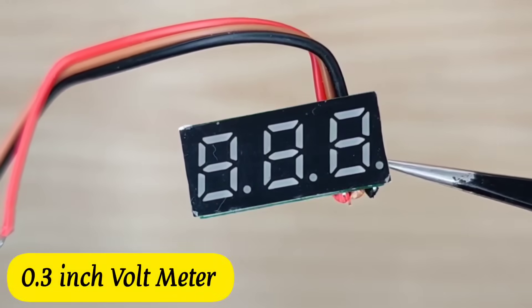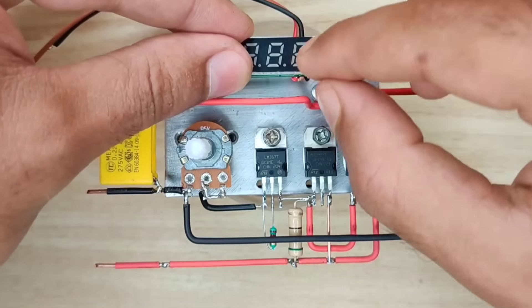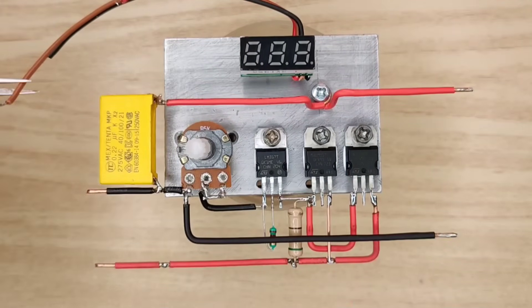Use a 0.3 inch voltmeter for tracking the output voltage. Connect wires accordingly.